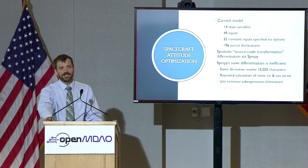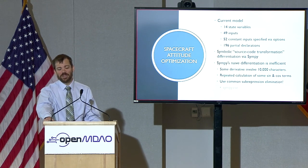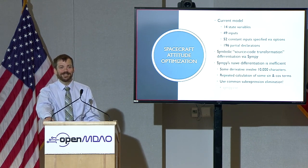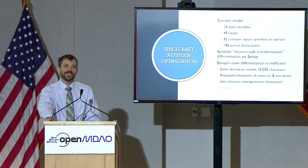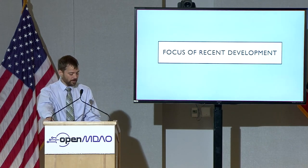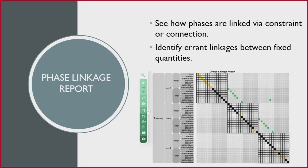Some of the derivative equations we're getting out of SymPy call the sine of a certain angle a thousand times. It's not doing it the most intelligent way possible when you use it in the naive case. That's a fairly large model with 14 state variables, 49 inputs, 52 constant inputs provided via options, and when defining our partials, it defines 196 partial derivative equations in that component. This is definitely not something you'd want to do manually.